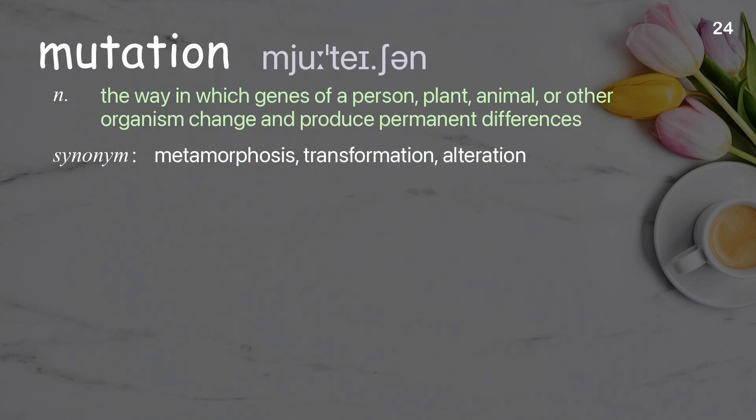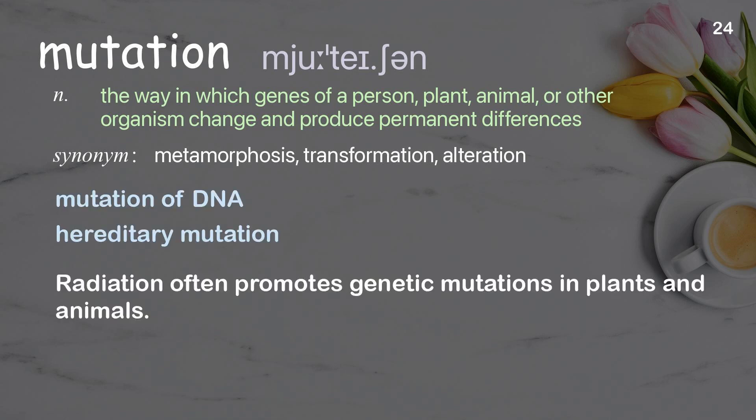Mutation: the way in which genes of a person, plant, animal, or other organism change and produce permanent differences. Examples: mutation of DNA, hereditary mutation. Radiation often promotes genetic mutations in plants and animals.